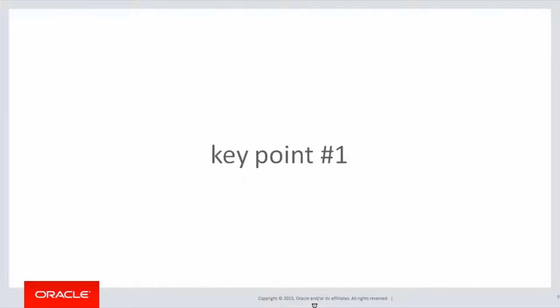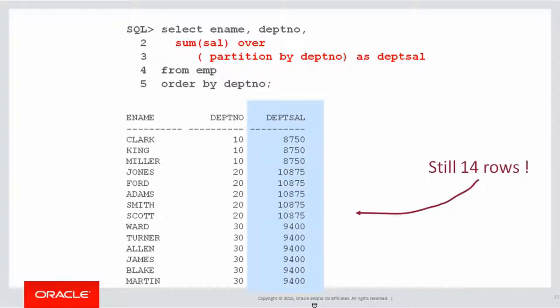Quick recap from the last session. Key point number one on aggregation: it's calculated, not restrictive, which means even though we're doing aggregation of data, we still get one row per row in the original result table.